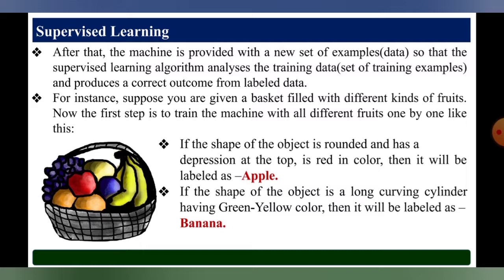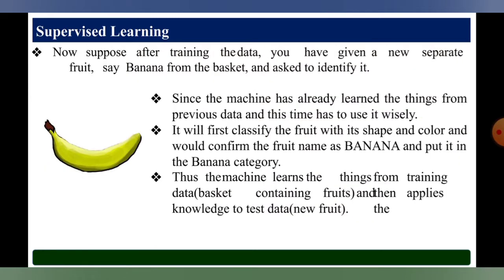If the shape of the object is a long curving cylinder having green-yellow color, then it will be labeled as banana. Now suppose after training the data, you have given a new separate fruit, say banana, from the basket and asked to identify it.